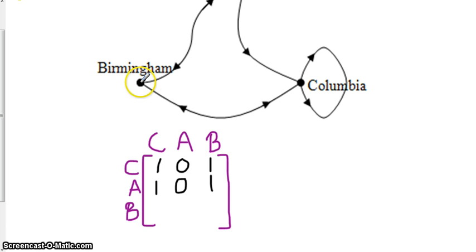Alright, and then Birmingham. I have an arrow going to Columbia, and I have an arrow going to Atlanta. So a one, a one, and a zero. Very simple.